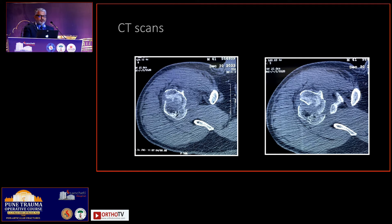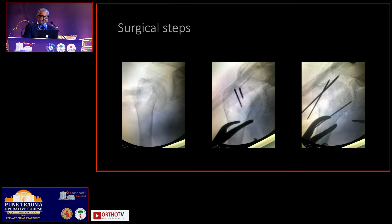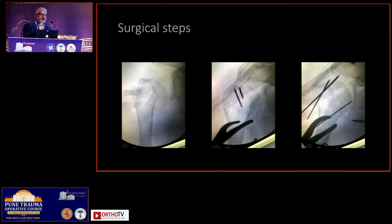What is important to see is, when you're looking at your axial cuts, where is the depression and which part is involved, because accordingly you're going to open up the rotator interval — that is the upper margin of subscapularis — open up the rotator interval, put in your finger, try to feel the step-off, and elevate the step-off from the metaphyseal region.